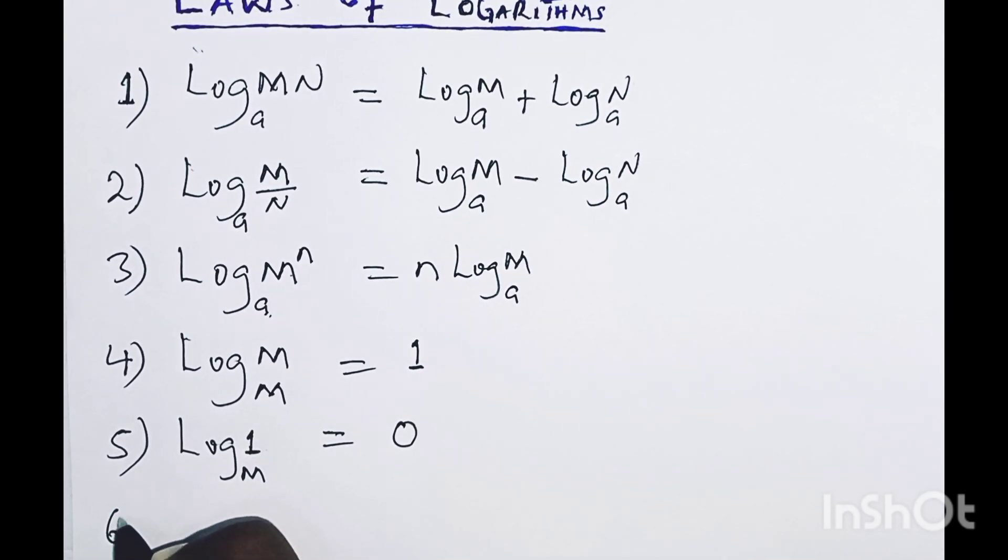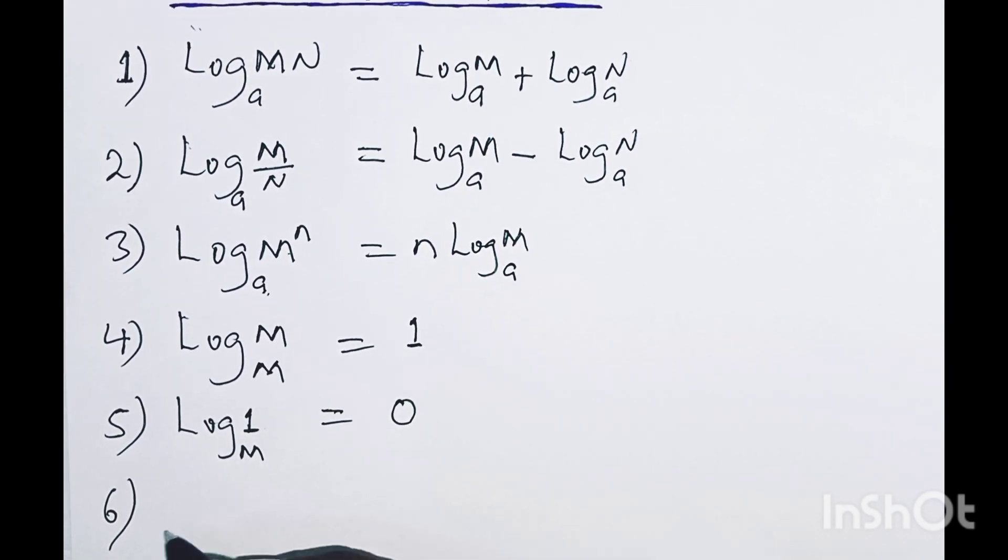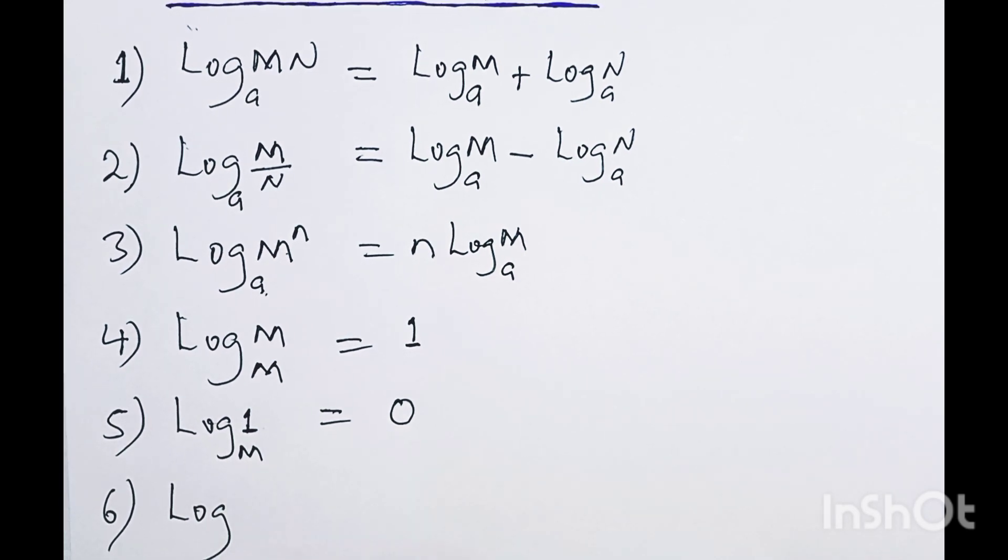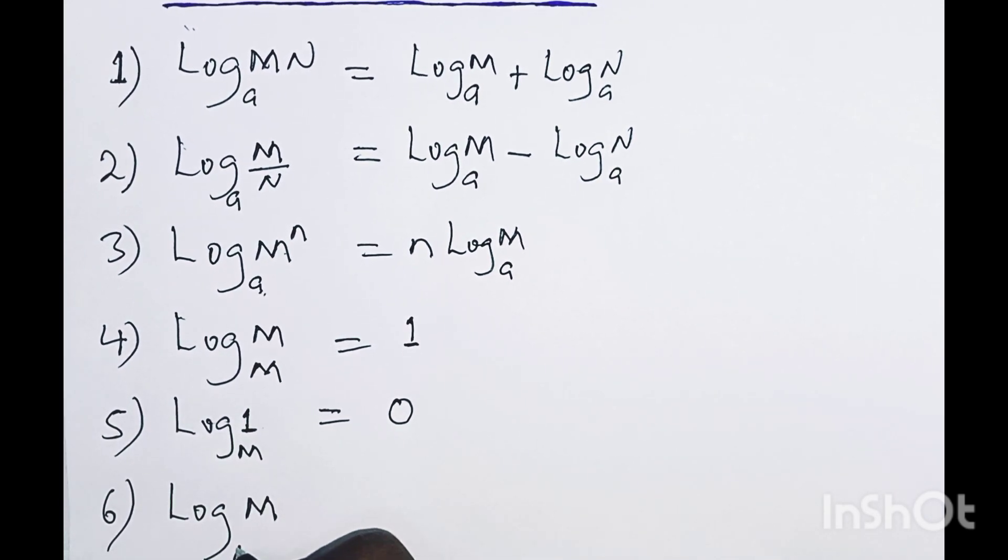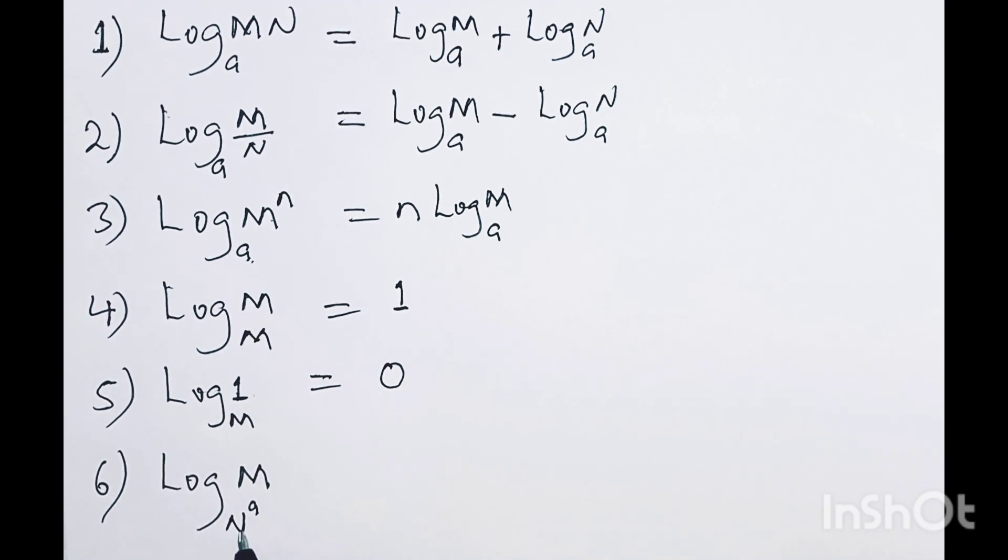Then law number six is saying if you have log base n to the power a of m, so now the base here is having a power. According to the law, you are going to take this a back here, the reciprocal of the power, that is one over a. You take one over a, then log m base n.